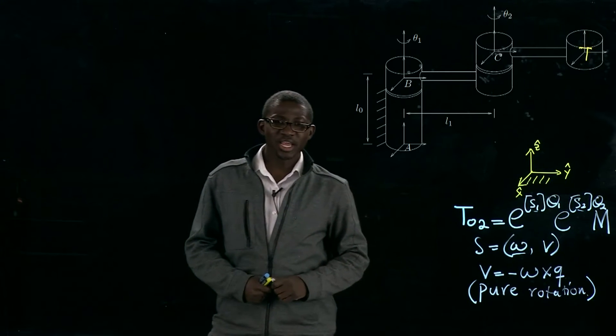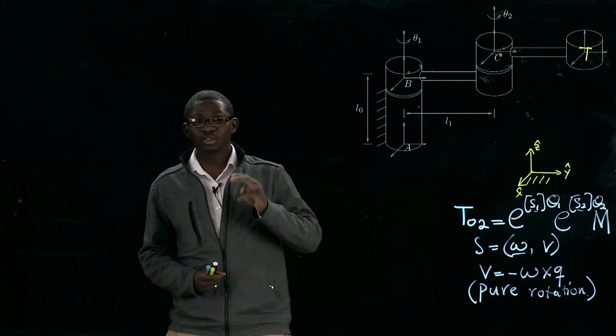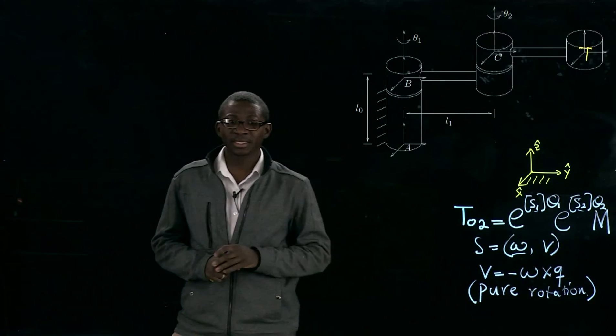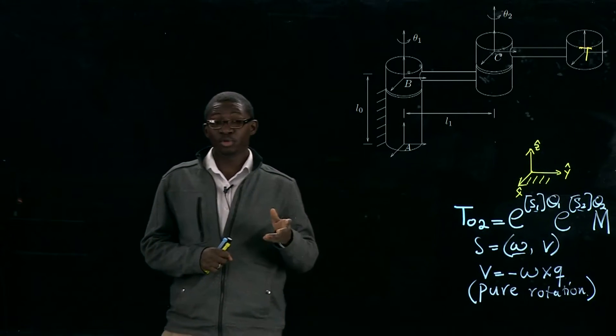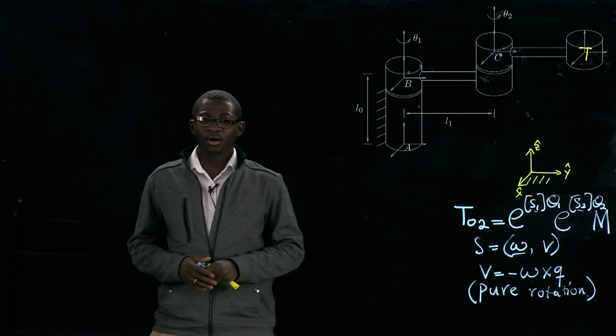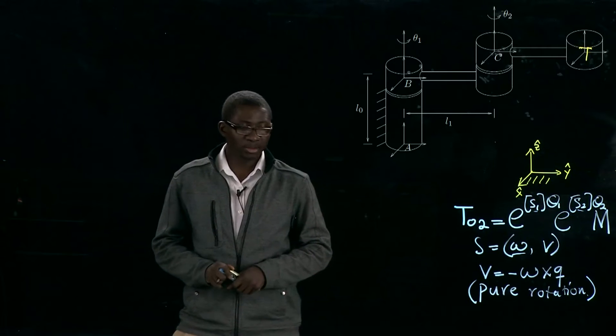Hello. Today, I'm going to use a two-revolute joint robot to explain the product of exponential formula of forward kinematics.